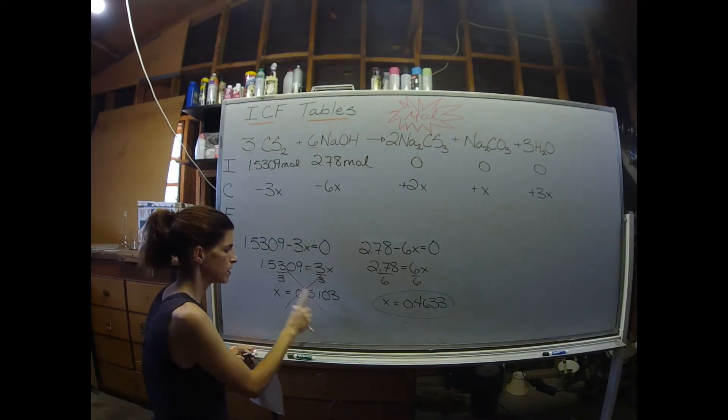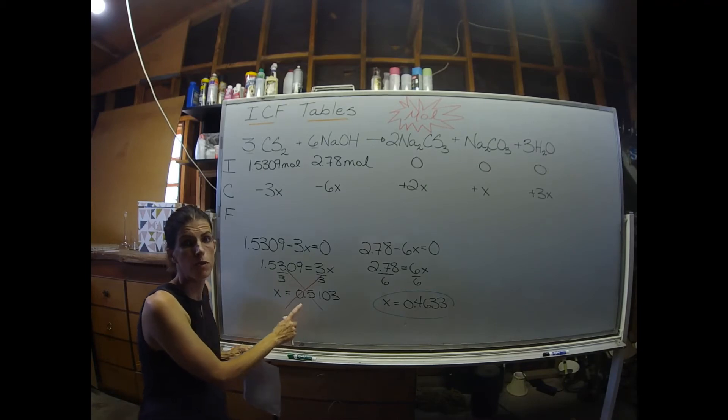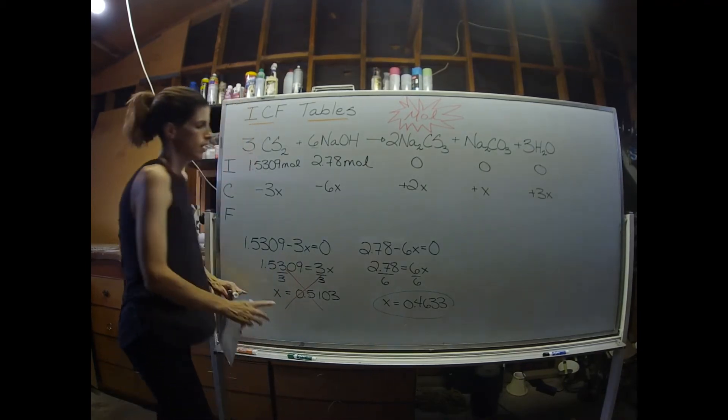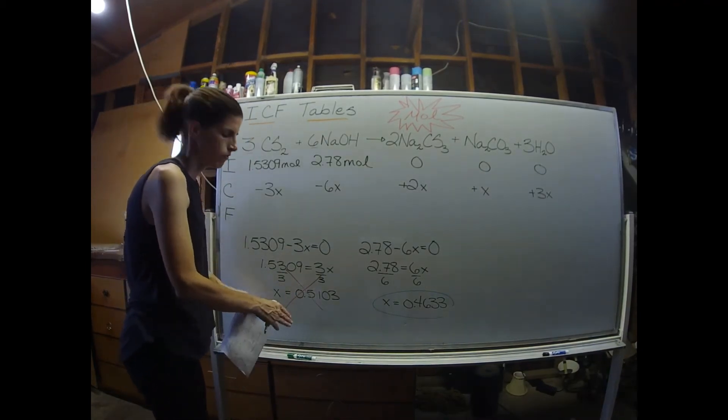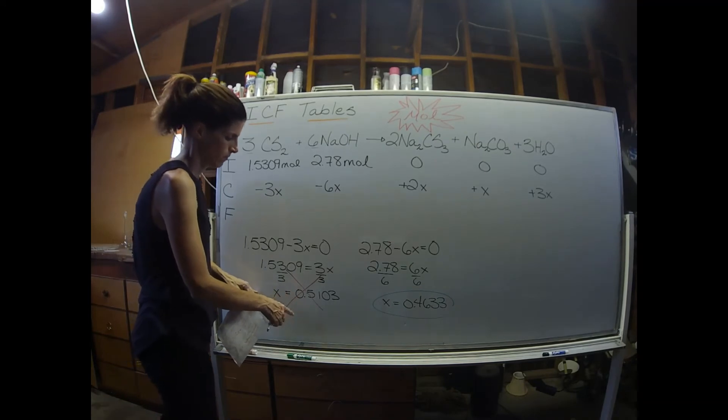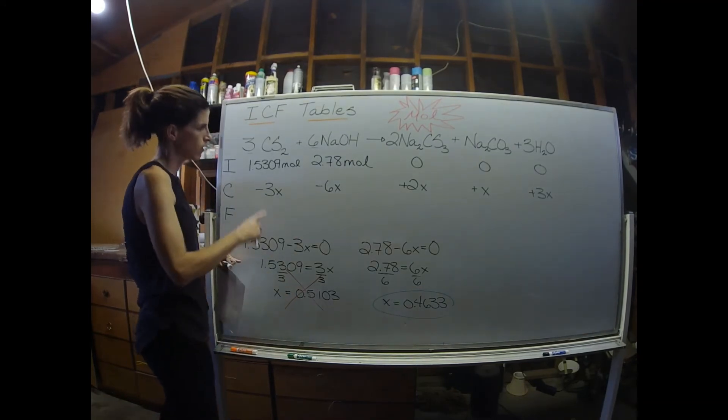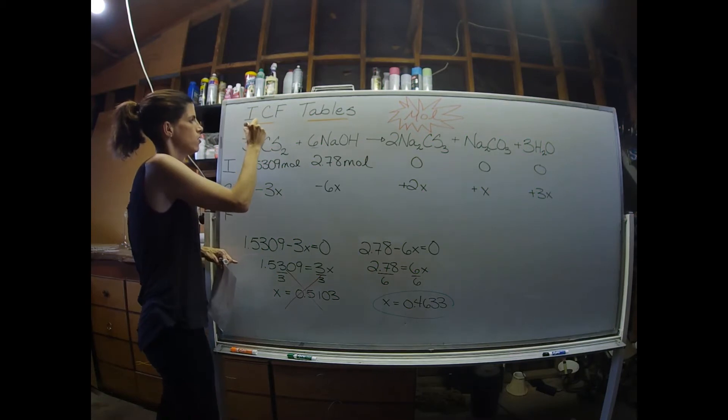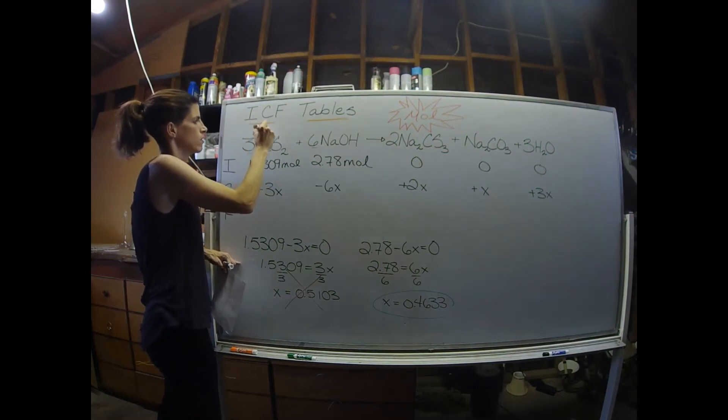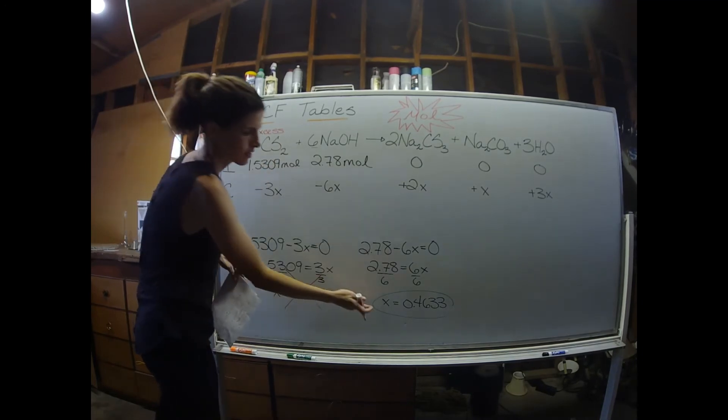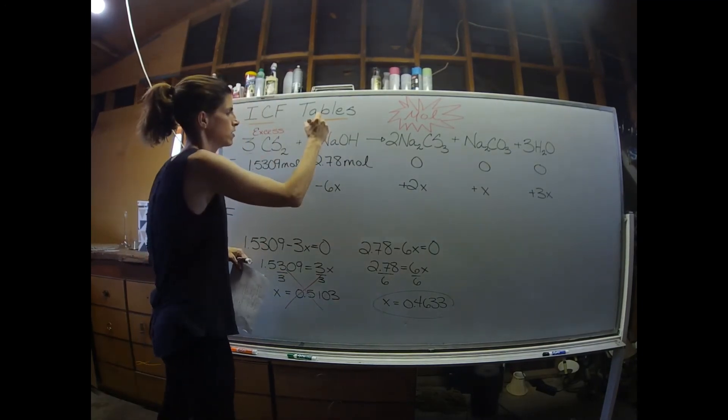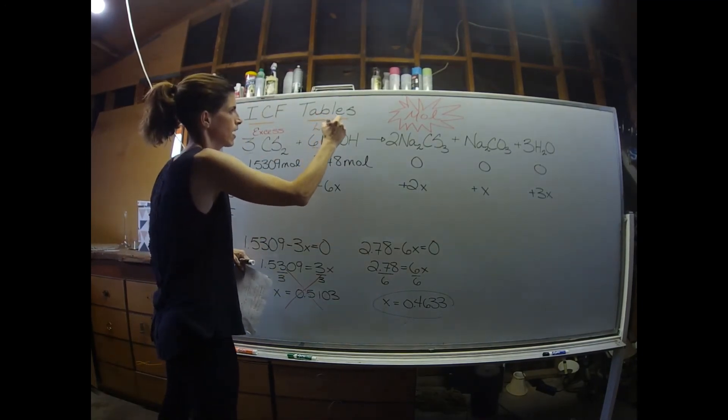The one piece of information though that can be garnered from the larger x value is the identity of the excess reagent. So since these values were associated with carbon disulfide, I know that this is my excess reactant. And since this was the smaller x value, this is going to be my limiting reactant.